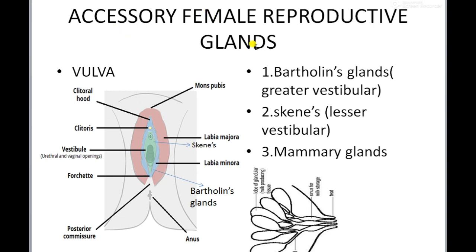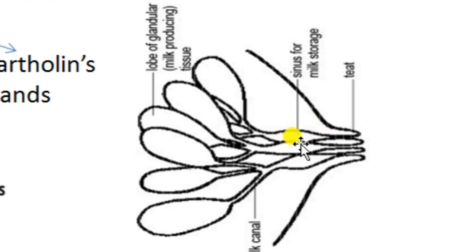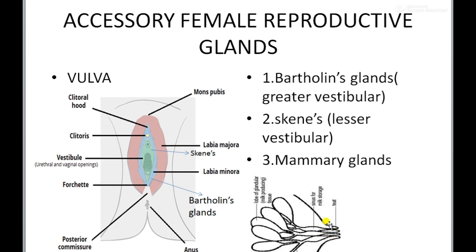The accessory glands present in females are Bartholin's glands, Skene's glands, and the mammary glands. Mammary glands are present in the thoracic region. A pair of mammary glands are present, also known as breasts. These glands contain 15 to 20 mammary lobes which contain alveoli. These alveoli secrete milk under hormonal control. After childbirth, these hormones are activated and milk is secreted. The alveoli open into mammary tubules, which are collected and open into a duct-like structure known as the mammary duct.